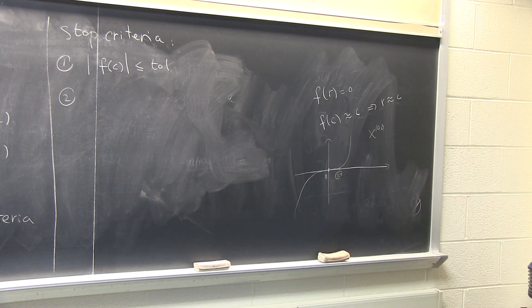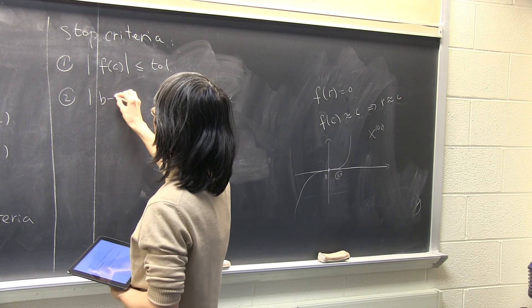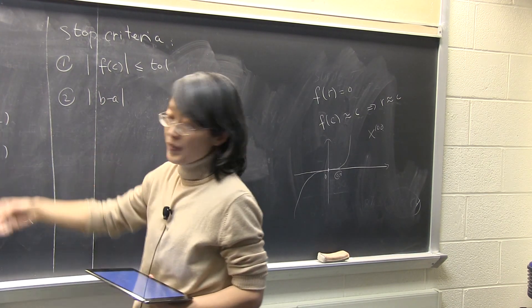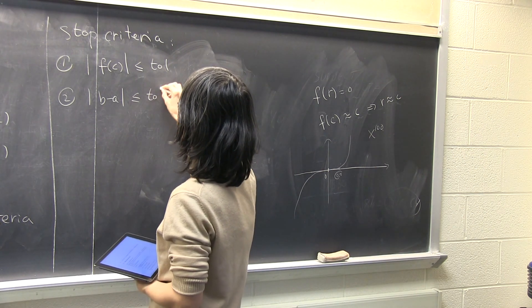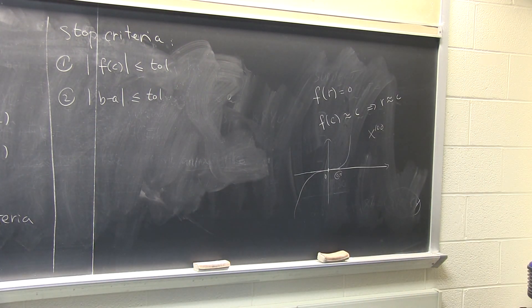That interval that you keep going down half and half and half, if it's really, really, really small, you can stop, right? So at your level b minus a at the level after many, many iterations, if this is really small, then you can stop, right? Is that a reasonable criterion?